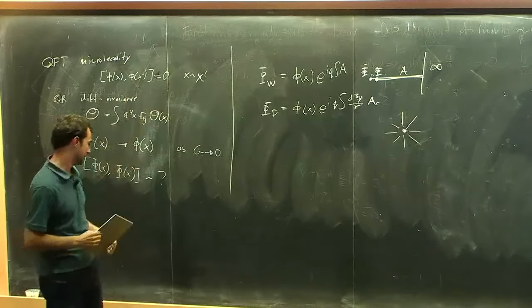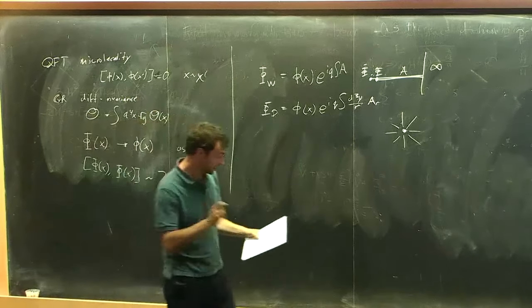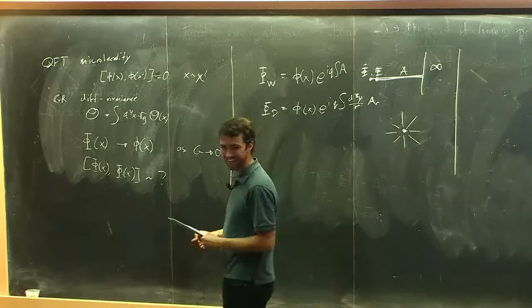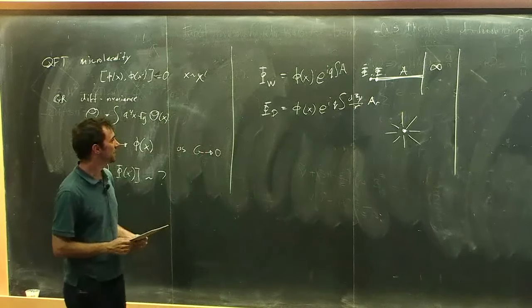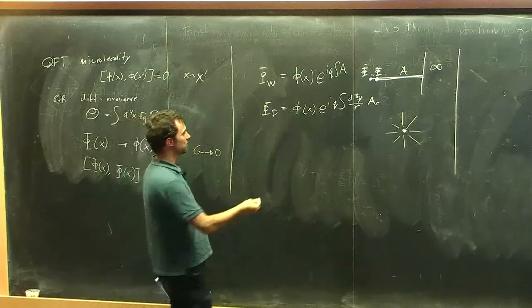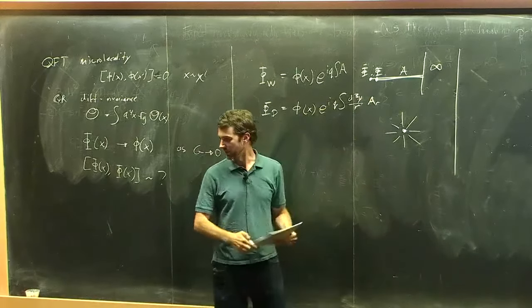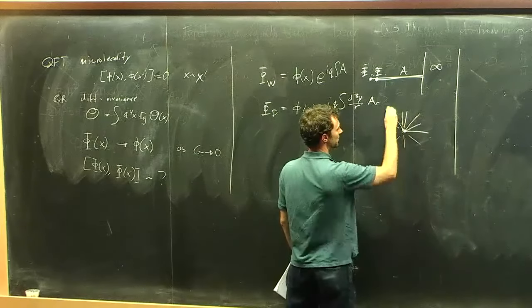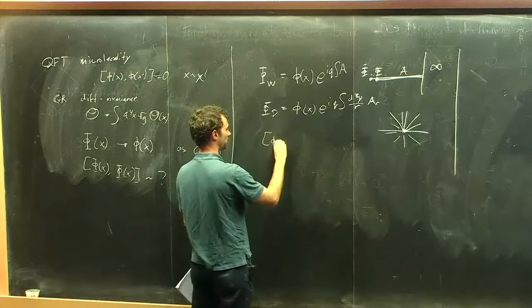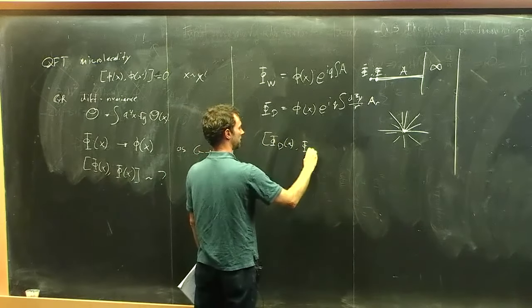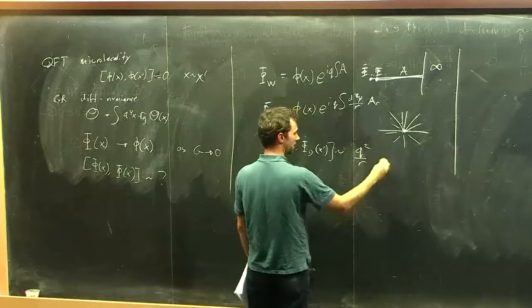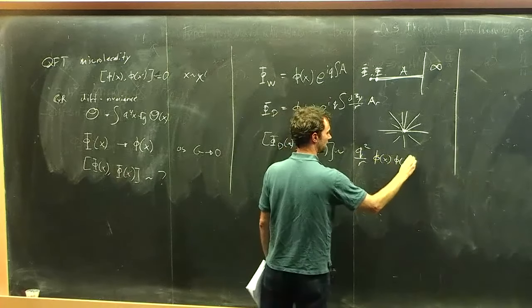The goal is to do an analogous construction for gravity at the linearized level. The Dirac-dressed operators do not commute with each other — you have a commutator like [phi_Dirac(x), phi_Dirac_dot(x')] going like q-squared over r times [phi(x), phi(x')]. So there is no sharp statement of microlocality in QED for charged operators. You cannot construct local charged operators that commute — they fail to commute because creating a charged excitation changes the total charge measurable at infinity.